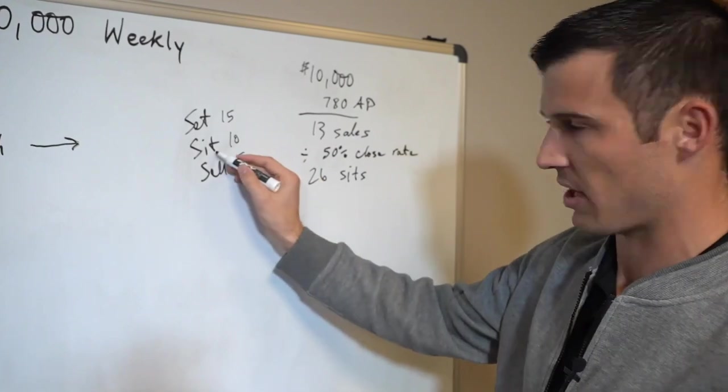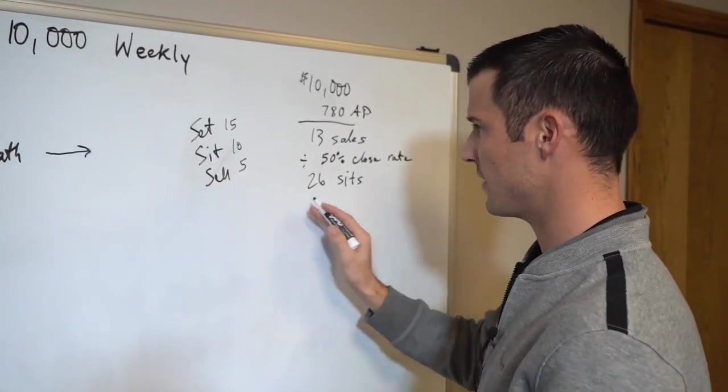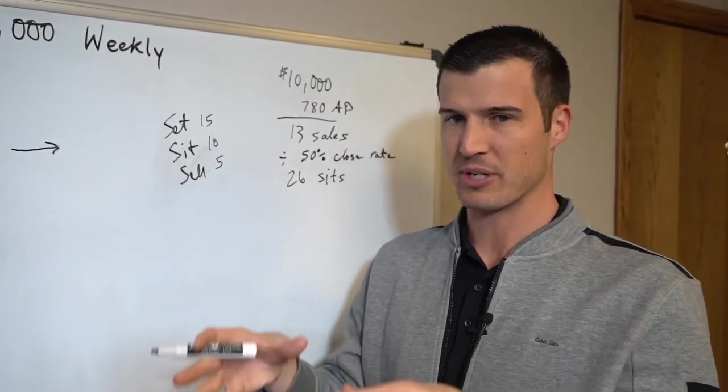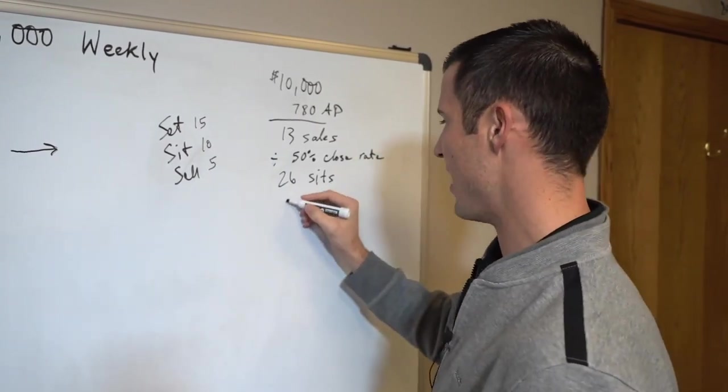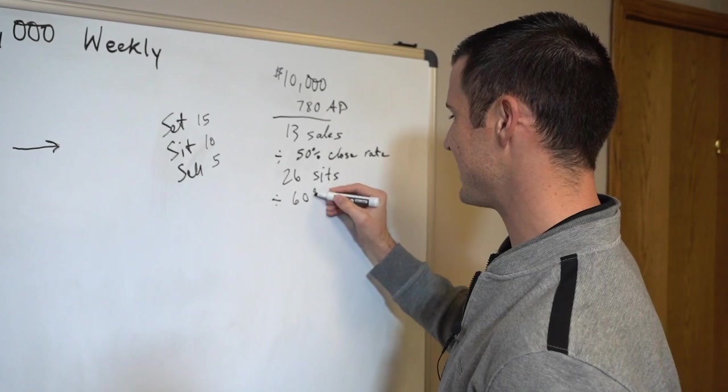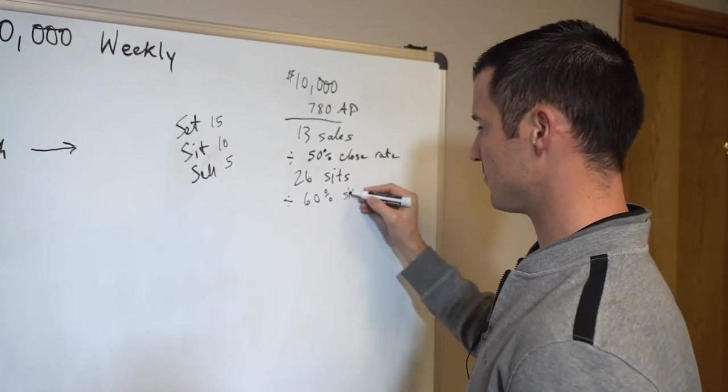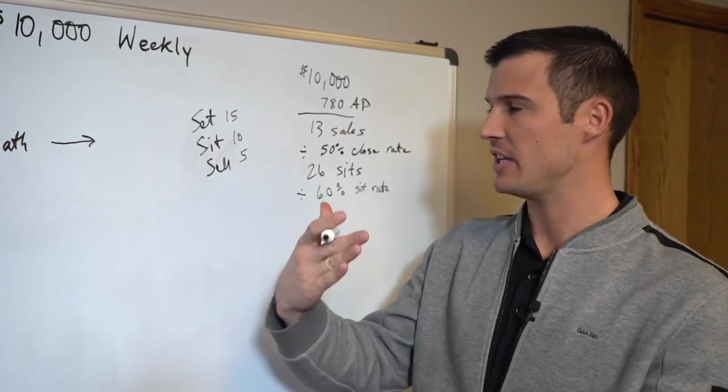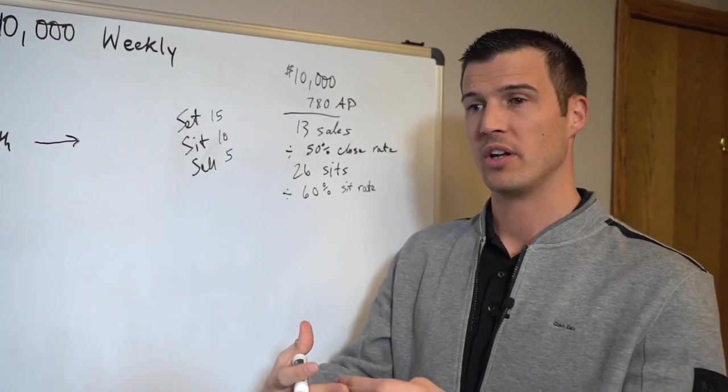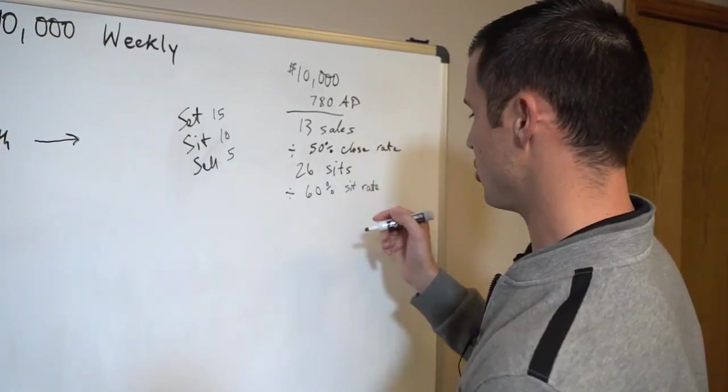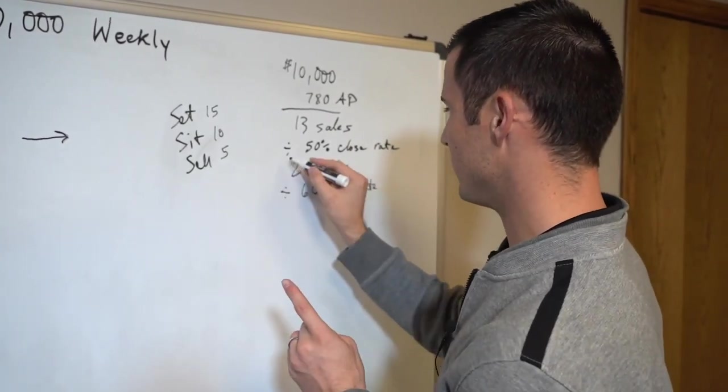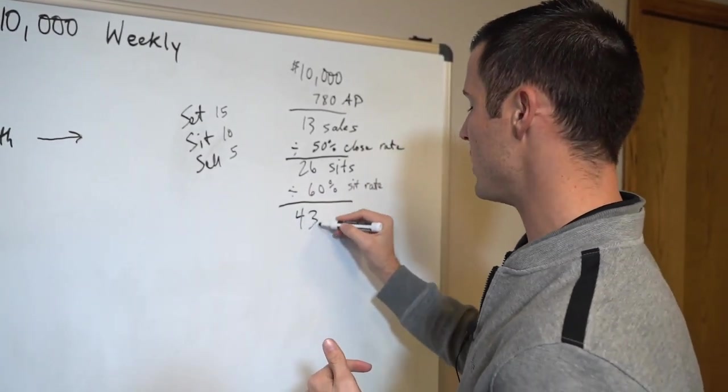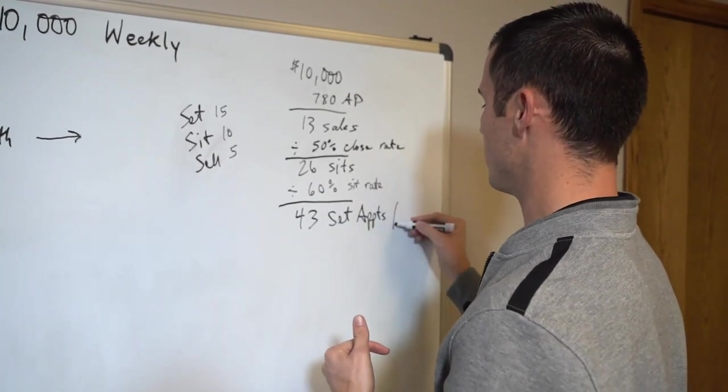26 sits means you're going to sit down and ask 26 people to buy every single week. Now let's say you divide it by a 60% sit rate, which means if you set 10 appointments, about six would actually show up. Some would porch you or stand you up or forget. So divided by 60%, that takes you to 43 set appointments per week.